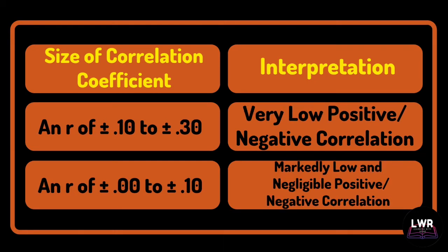The last two rows of the table are as follows. An r of positive or negative 0.10 to 0.30 is a very low positive or negative correlation. An r of positive or negative 0.0 to 0.10 is a markedly low and negligible positive or negative correlation.